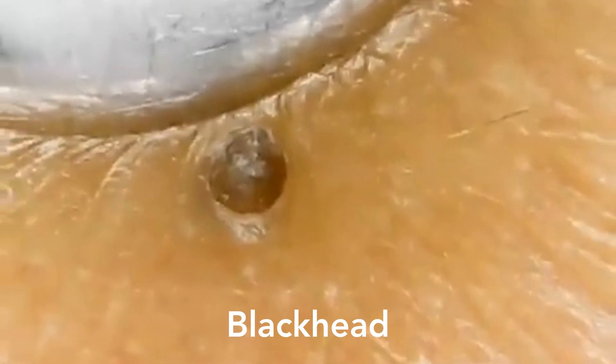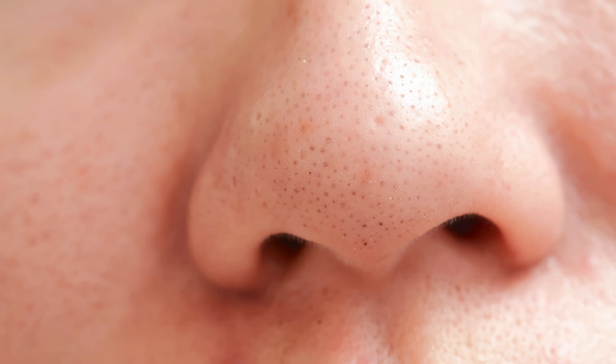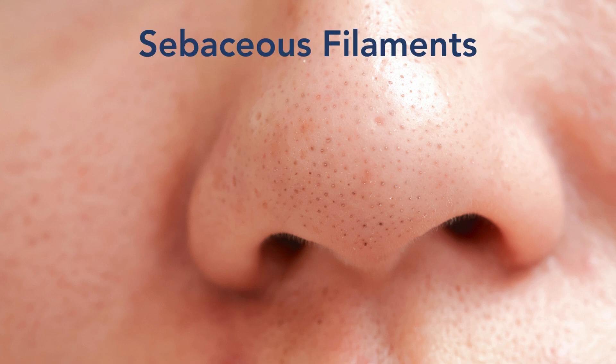This is a sebaceous filament. This is a blackhead. What's the difference? On this nose, all the pores are roughly the same size — so this is a sebaceous filament. Sebaceous meaning oil, filament meaning thread.